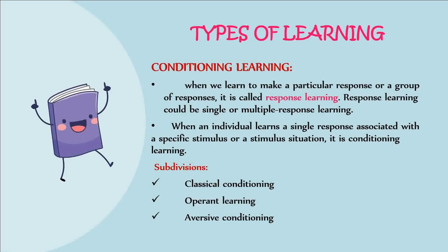Types of Learning. Conditioning Learning: When we learn to make a particular response or a group of responses, it is called response learning. Response learning could be single or multiple. When an individual learns a single response associated with a specific stimulus or stimulus situation, it is conditioning learning. Subdivisions of conditioning learning include classical conditioning, operant learning, and aversive conditioning.